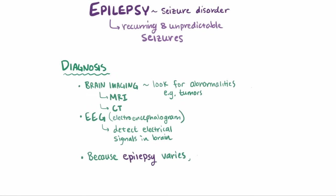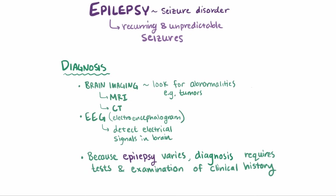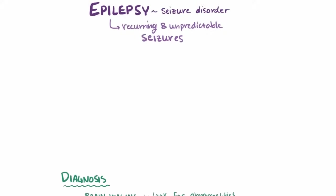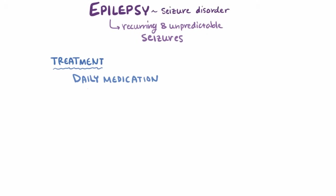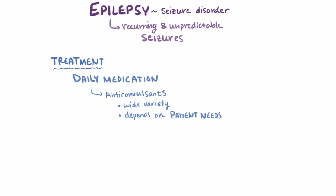Because epilepsy can vary from patient to patient in the type, severity, and frequency of seizures, diagnosis typically involves a variety of examinations and tests in combination with a thorough evaluation of clinical history. Once epilepsy has been diagnosed, it's often treated with daily medication, the primary form being anticonvulsants, of which there are a wide variety of options with different targets in the brain. The choice is based on the specific needs of the patient, including factors like age, lifestyle, other health problems, and the category or subcategory of the epilepsy syndrome.